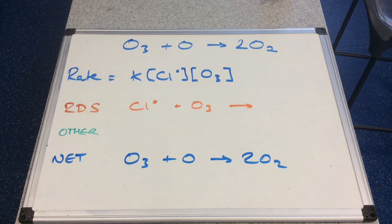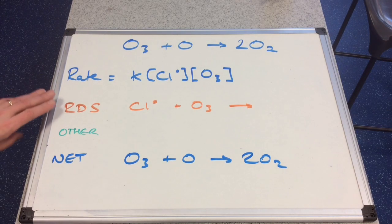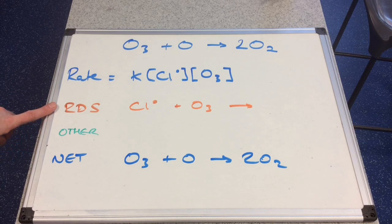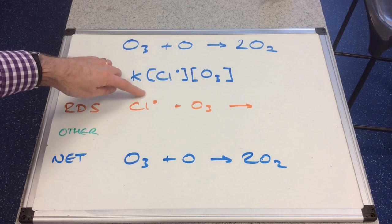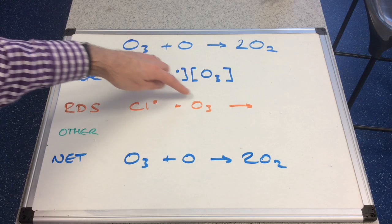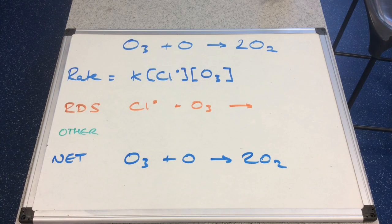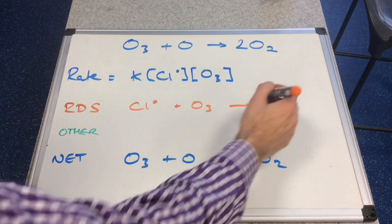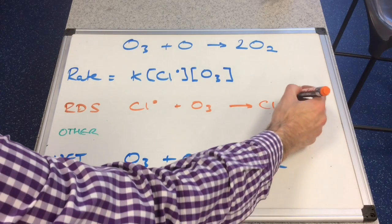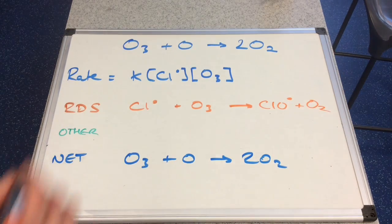So what is involved in the rest of the rate determinant step and in the green other step? If you remember from your mechanisms from AS, we've got a radical reacting with a stable molecule. So this is going to be a propagation reaction, and therefore we need to form a different radical and a different stable molecule. So we're going to make the ClO radical and an O2 molecule.